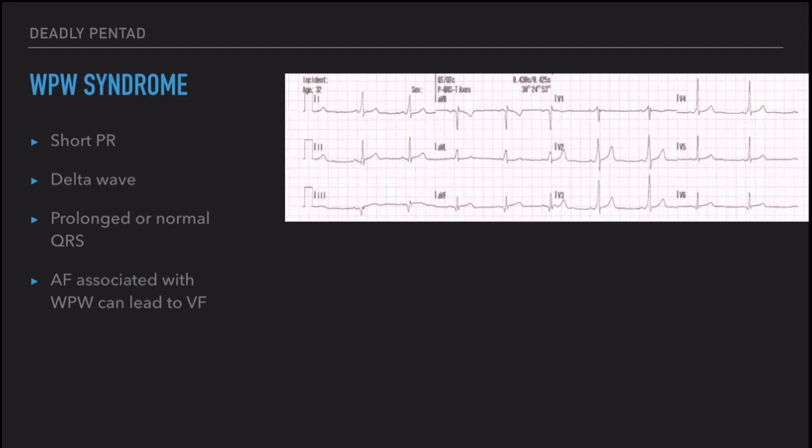Sometimes atrial fibrillation can occur in WPW syndrome patients, and it can be lethal. In AF, the rate is normally controlled by the AV node. But whenever there is an accessory pathway conducting atrial fibrillation, it can result in uncontrolled ventricular depolarization and ventricular fibrillation. AF in a patient with WPW syndrome is lethal — always suspect this.